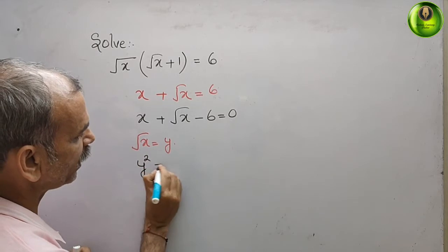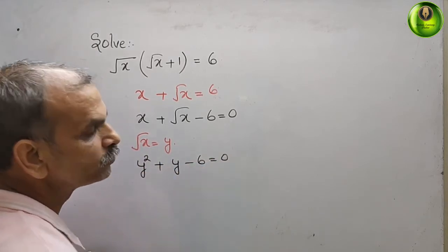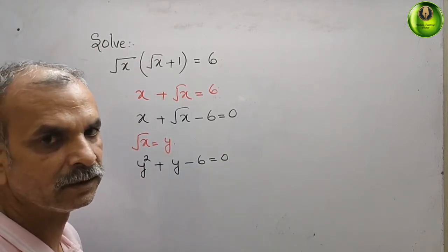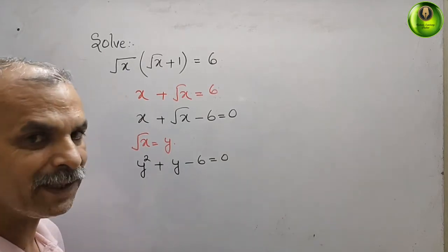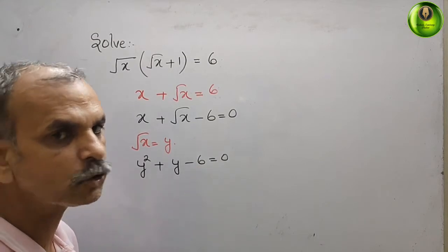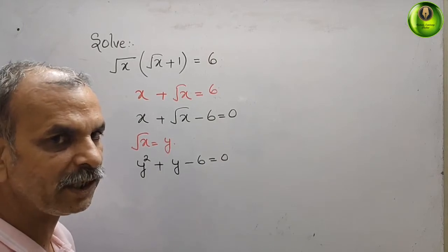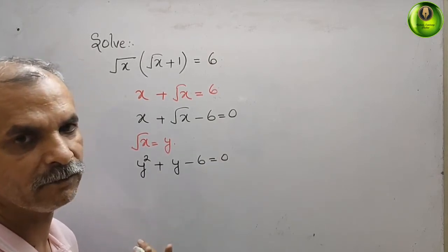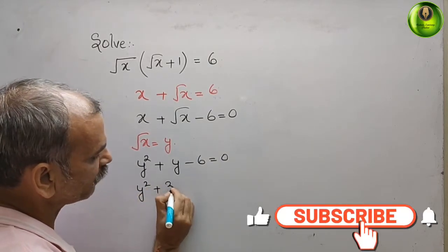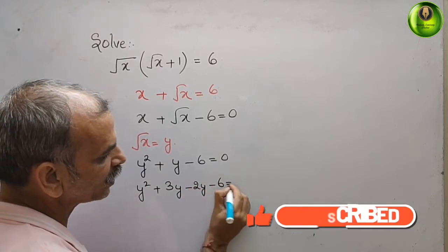Now go for middle term splitting. We have 6, which is 2 × 3. Since the middle term is positive, we use +3 and -2 because +3 - 2 = 1. So we write: y² + 3y - 2y - 6 = 0.